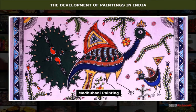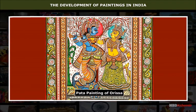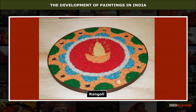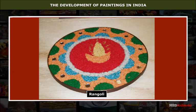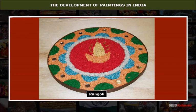Folk paintings include the Madhubani style that originated in Bihar and has enchanted the world ever since. Other examples include the Warli school of Maharashtra, the Pata of Orissa, and floor paintings such as Rangoli in Maharashtra, Rangavali in Karnataka, Kolam in Tamil Nadu, Mandana in Madhya Pradesh, Alpana in West Bengal, and Aipana in Uttarakhand.